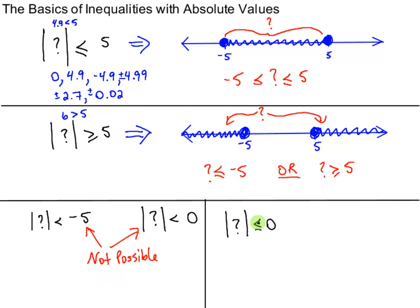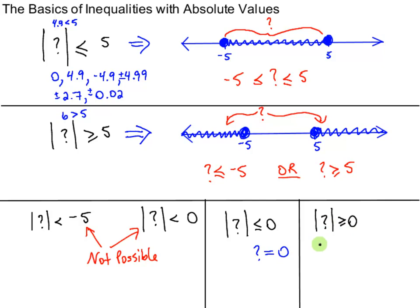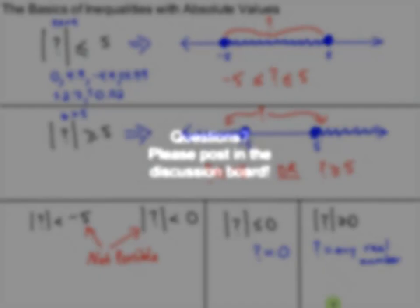The absolute value of question mark is less than or equal to 0. Well, it can't be less than 0, but it could be equal to 0. So the only thing that could go inside the absolute value in this case would be 0 — there's only one number that makes this statement true. And finally, the absolute value of something is greater than or equal to 0. The absolute value of anything is greater than or equal to 0, so question mark could be any real number — positive, negative, fraction, decimal — because when you take the absolute value, it will definitely be greater than or equal to 0.